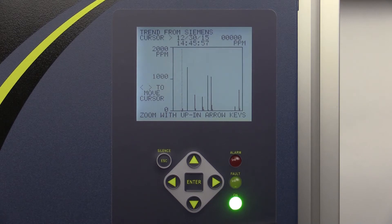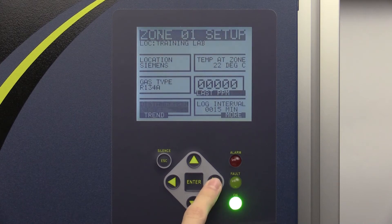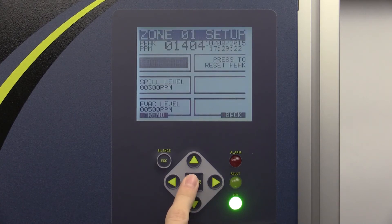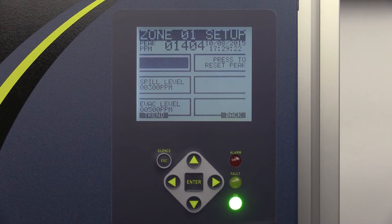Select the More option on the first Zone Setup screen and access the second Zone Setup screen. From this screen, you can set the leak, spill, and evacuation levels for that specific zone. You can set these values to whatever level you would like. However, they must increase sequentially from leak level to spill level to evacuation level.